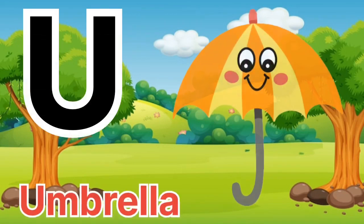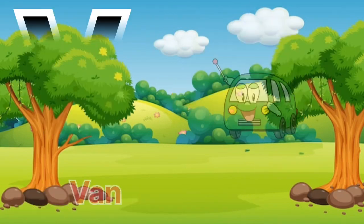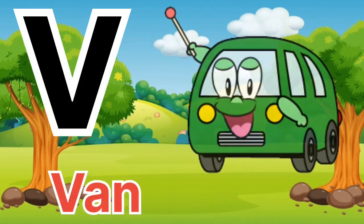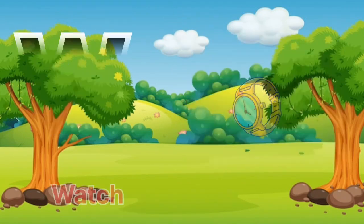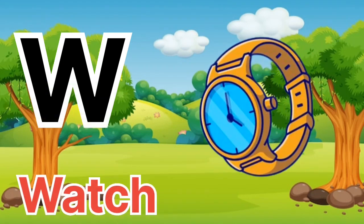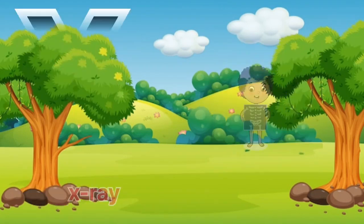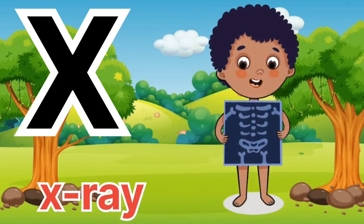U for umbrella, V for van, W for watch, X for x-ray.